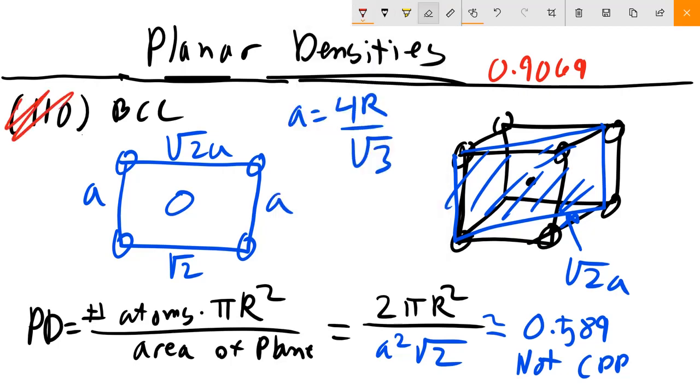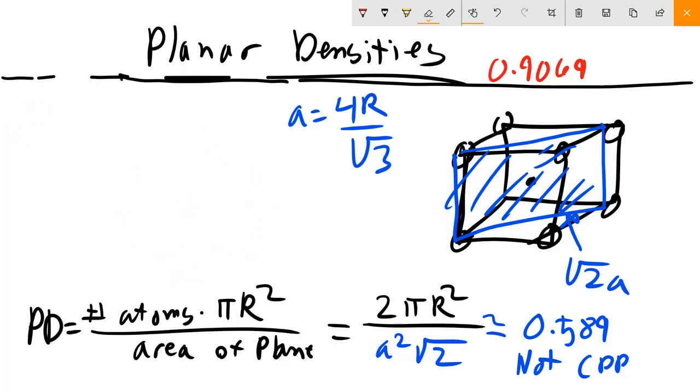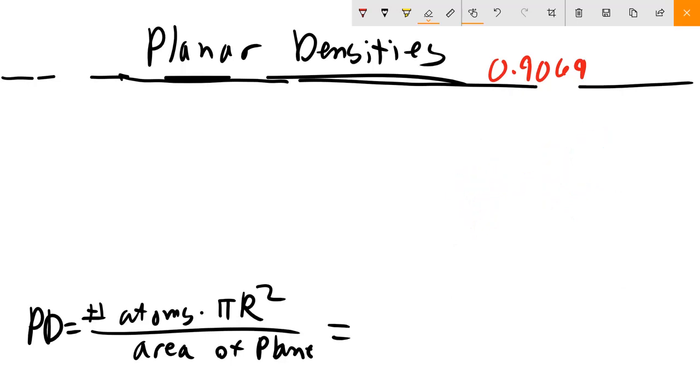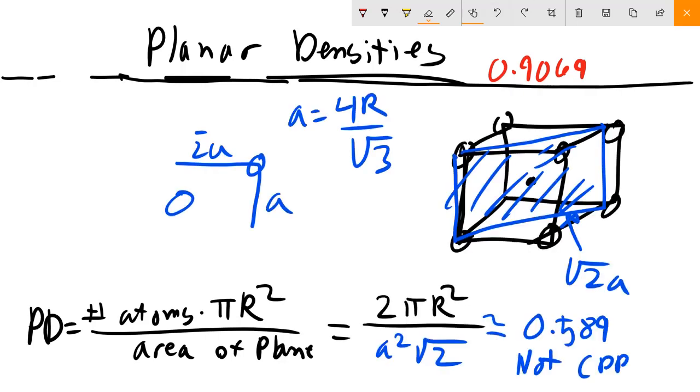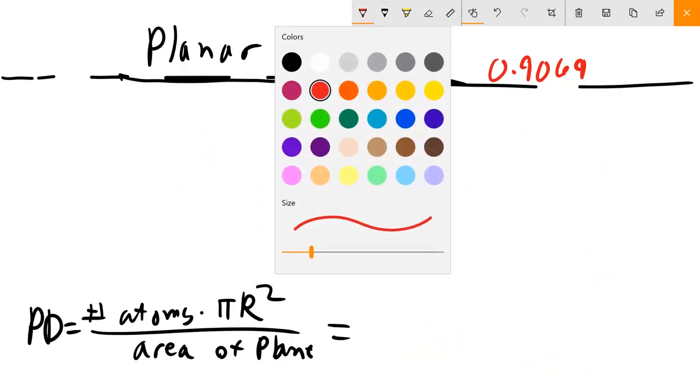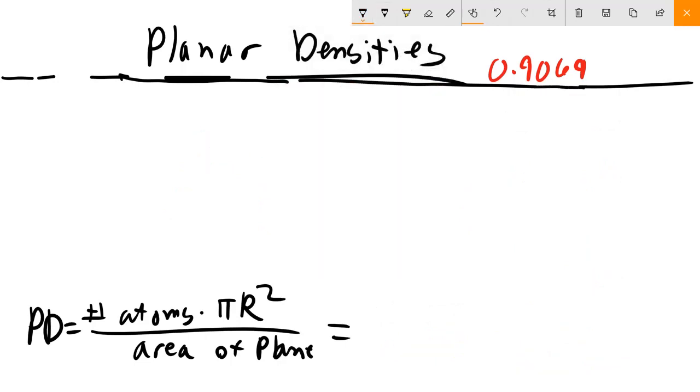All right. So let's try one more example. And we're going to look at the 111 plane in FCC. And you'll notice that, not to give it away, but there are no close packed planes in structures that are not inherently close packed. So you actually can't have a close packed plane in BCC or simple cubic either. And there's actually only one family essentially of planes that are close packed in FCC. So, 111 FCC.